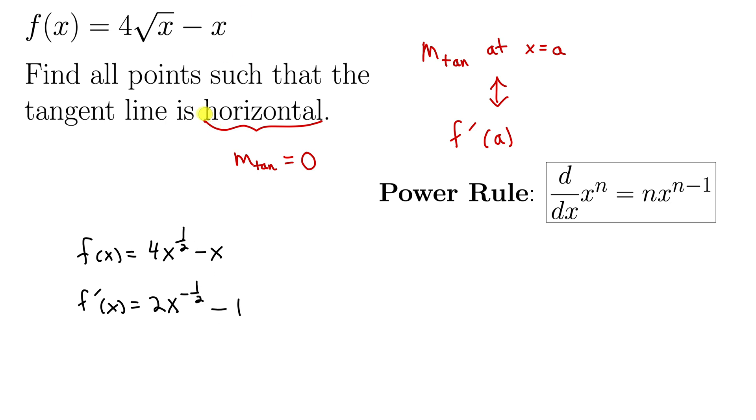And since we want this horizontal tangent line, we're going to set this whole thing equal to 0. And this is a process we'll do again and again in calculus, right? Because we are very interested in finding places where the tangent line is horizontal. Why? Well...